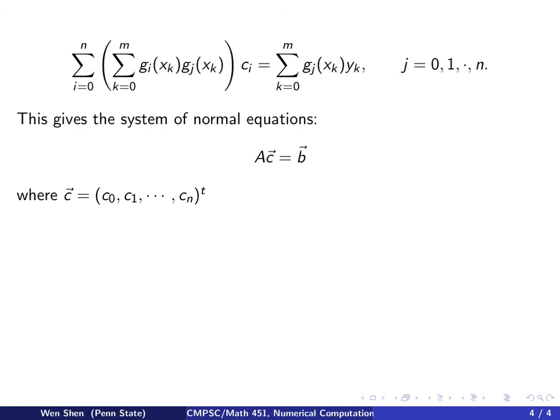We can rewrite this into a matrix-vector form: A matrix times c vector equals b vector. The c vector is the collection of unknowns, c_0 to c_n. The A matrix is the coefficient matrix.